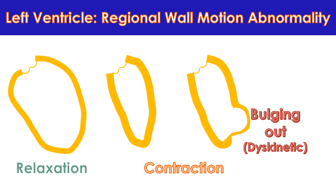Another important aspect is the contraction of each region of the left ventricle. If all regions contract normally, it is reported as no regional wall motion abnormality. If a particular region contracts poorly, it is reported as hypokinetic. A region which is not contracting at all is reported as akinetic. Sometimes a region might bulge out when all other regions are contracting — such a region is called dyskinetic. Regional wall motion abnormalities are common after a heart attack, when a blood vessel supplying a region of the heart muscle is blocked.